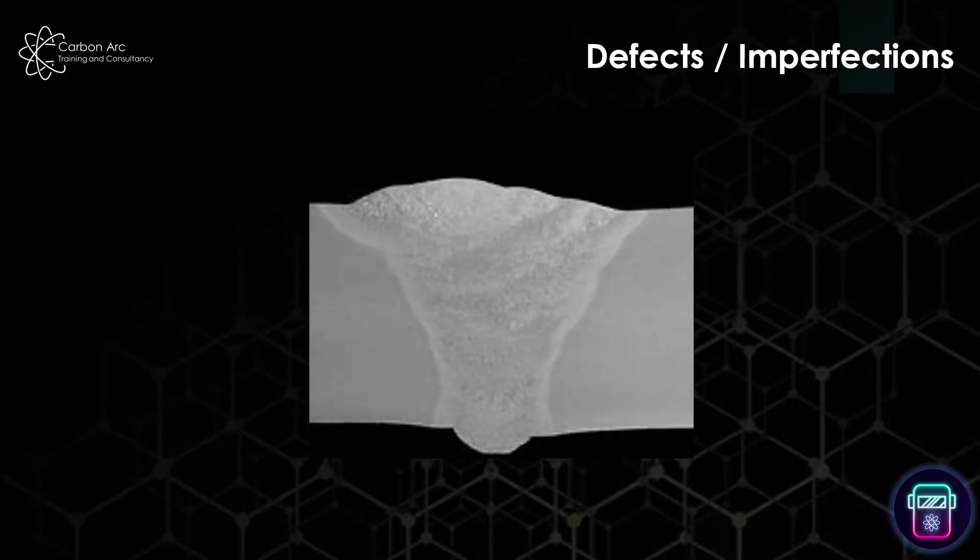Here's a cross section of our weld. This is a macro section, so a macro is good for looking at overall weld geometry and welding defects. Normally it happens at around 5 to 10 times magnification as a maximum, and we're not looking at grain structure here, only the overall quality of the weld metal.